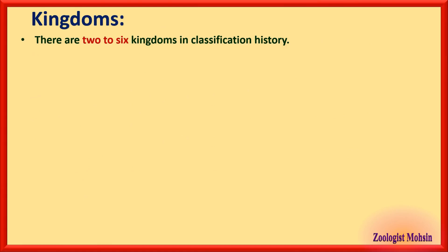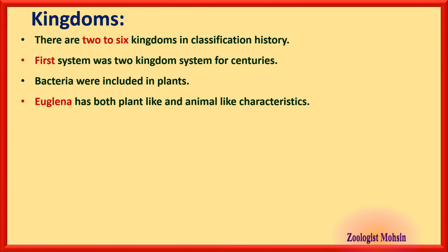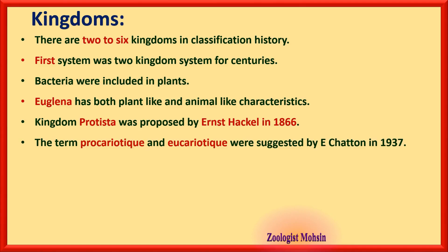There have been two to six kingdoms in classification history. The two-kingdom system remained the only classification for centuries, with bacteria included in plants. Euglena has both plant-like and animal characteristics and forced scientists to devise new kingdoms. Kingdom Protista was proposed by Ernest Haeckel in 1866 — a very important MCQ to remember.